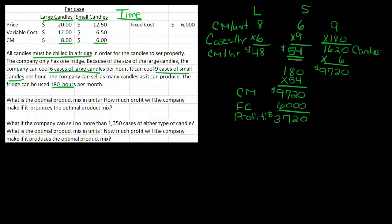Now, what happens if we put another constraint in here? Let's look at question number two. What if the company can sell no more than 1,350 cases of either type of candle? Well, we just said that if we made all small candles, we could make 1,620 cases of candles. That's more than 1,350. Are we going to make more candles than we could sell? Probably not.